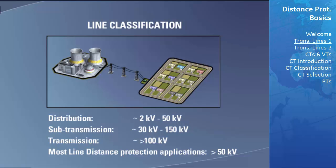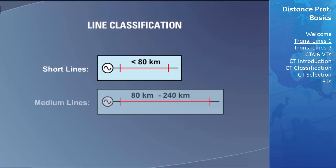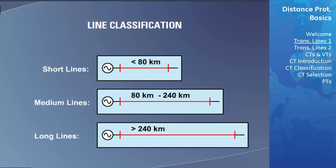Transmission line lengths have also been classified into three categories. Short transmission lines are less than 80 kilometers in length. Medium transmission lines are roughly between 80 kilometers to 240 kilometers. Long transmission lines are greater than 240 kilometers in length.